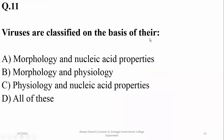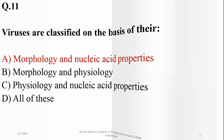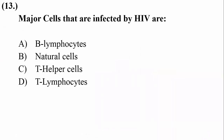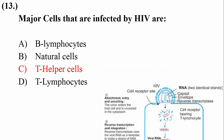Viruses are classified on the basis of their morphology as well as nucleic acid properties. Physiology is not a concern of classification. Smallpox is a disease caused by a DNA-enveloped virus, and the major cells infected by HIV are helper T-lymphocytes.